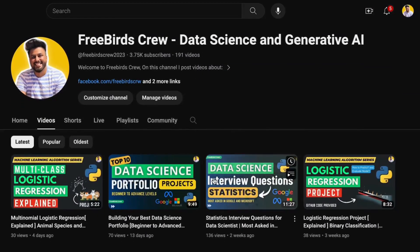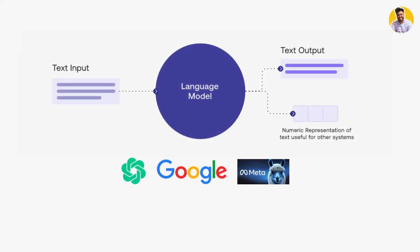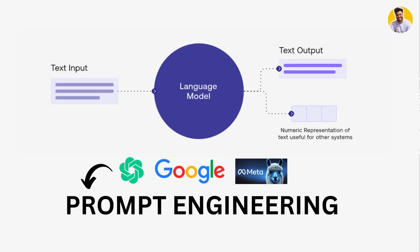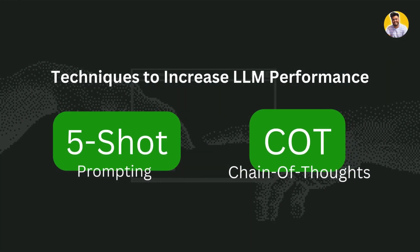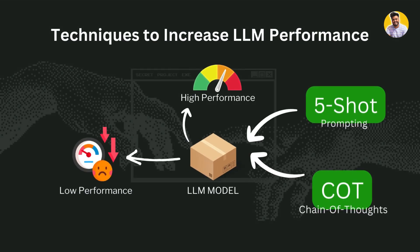Hello guys and welcome to Freebird's review. If you know about large language models and prompt engineering, the topic of 5-shot prompting and chain of thought prompting is also important, because these techniques help the large language model to do specific tasks and can be evaluated on various benchmark tests as well.